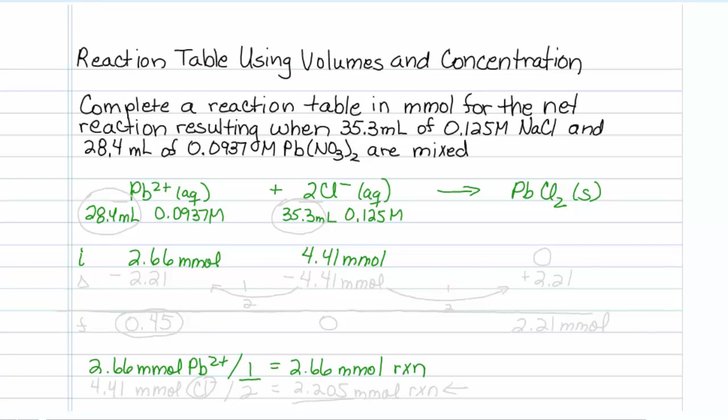For the chloride, that is 4.41 millimoles of chloride. The coefficient in front of the chloride is 2, so that gives us 2.205 millimoles of reaction. The lower one is a smaller value, so our chloride is our limiting reagent. So just like we did last time, we subtract all of our limiting reagent.